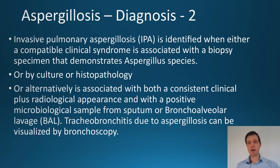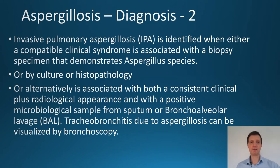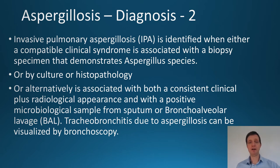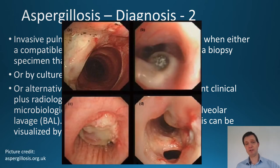Ideally you need a biopsy sample; however, how you get that biopsy sample depends on how easy it is to access the particular lesion. Sometimes if you can't get a biopsy specimen for histopathology or for culture, some people may go on to do bronchoalveolar lavage, or sometimes both things will be done. Either way, a biological sample for culture is ideally suitable. The point of doing a bronchoscopy is not just to do a bronchoalveolar lavage but also to look at the trachea and the bronchial tree.